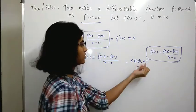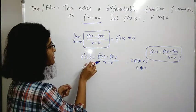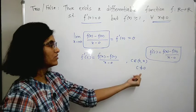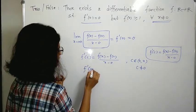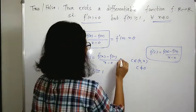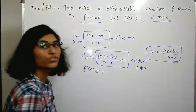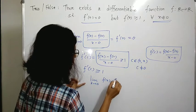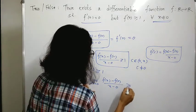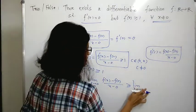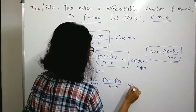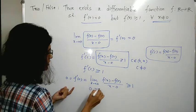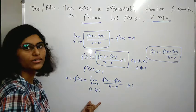Since c is in the open interval (0, x), c is non-zero. Therefore f'(c) ≥ 1. So [f(x) - f(0)] / (x - 0) ≥ 1. Taking the limit as x tends to 0, the left side becomes f'(0) and the right side is 1, giving 0 ≥ 1, which is a contradiction.